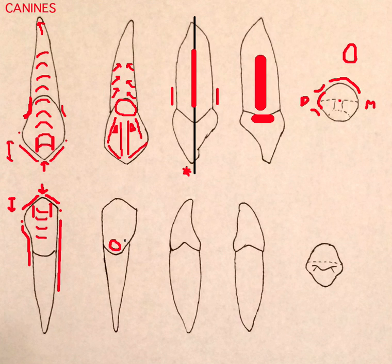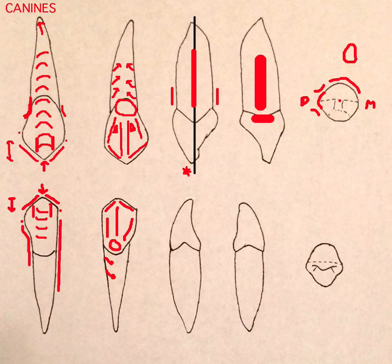Smaller cingulum, smaller marginal ridges, but we still have that lingual ridge — that's a canine feature, though smaller here. We still have the cusp ridges and lingual taper, plus convexity throughout the root. That's all similar to the maxillary.